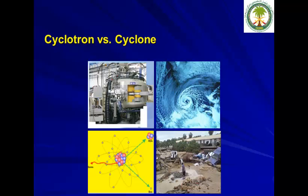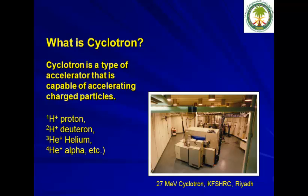Cyclotron versus cyclone — I always explain this because lots of people I've met are somewhat ignorant about what cyclotrons are. I tell them a cyclotron is a machine that saves mankind, whereas a cyclone is something that destroys mankind. So there is a clear distinction between these two things.